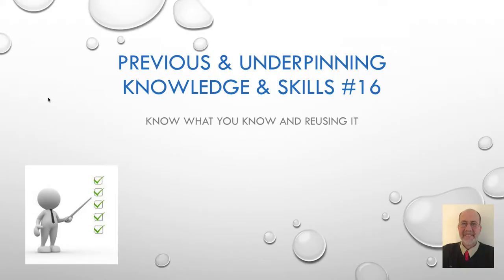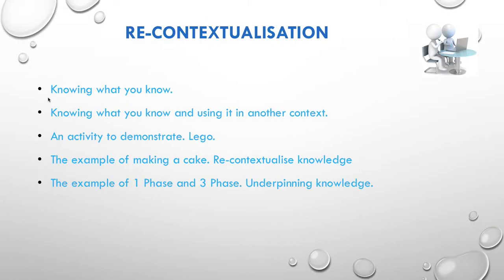Welcome to cognitive skill number 16: previous and underpinning knowledge and skills — know what you know and being able to reuse it. We call this recontextualization: being able to know what you know and then reuse it in another context. It's quite a skill to be able to know what you know. That might sound obvious, but it's not as easy as you think. Once you know what you know, you may be able to apply it in another context.